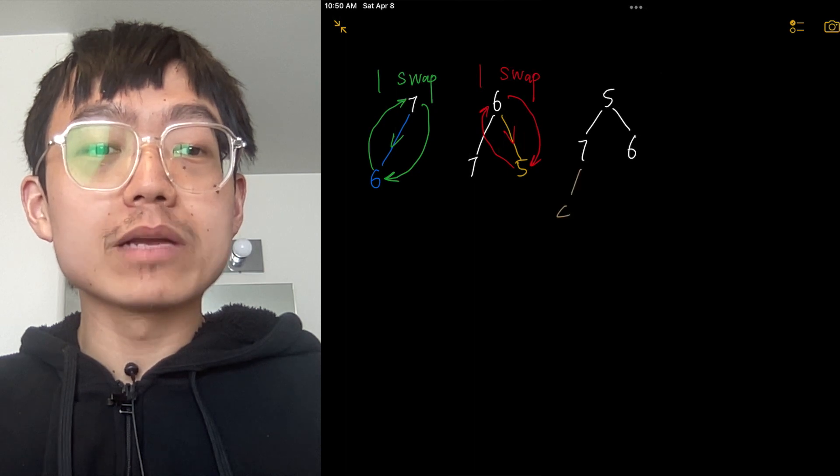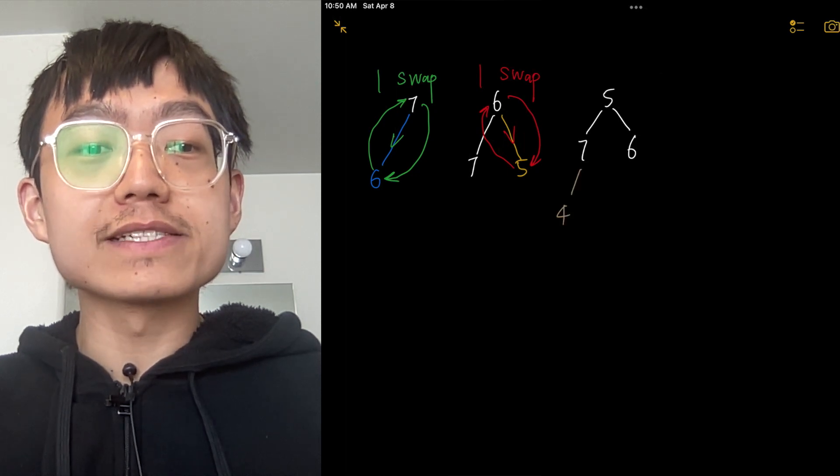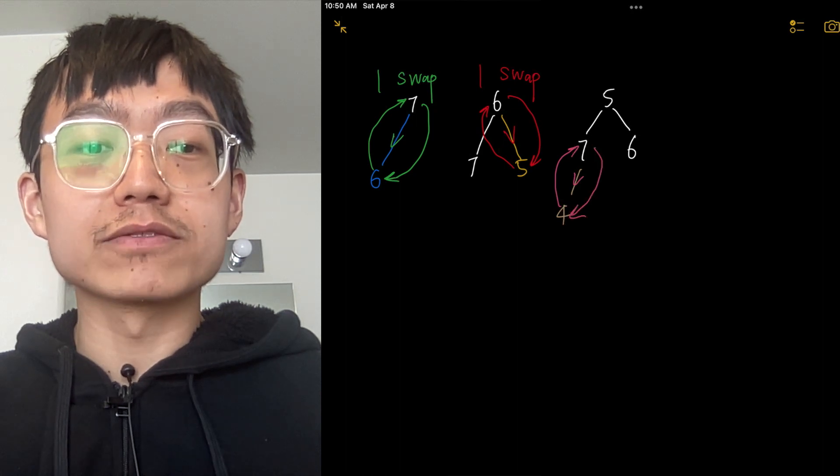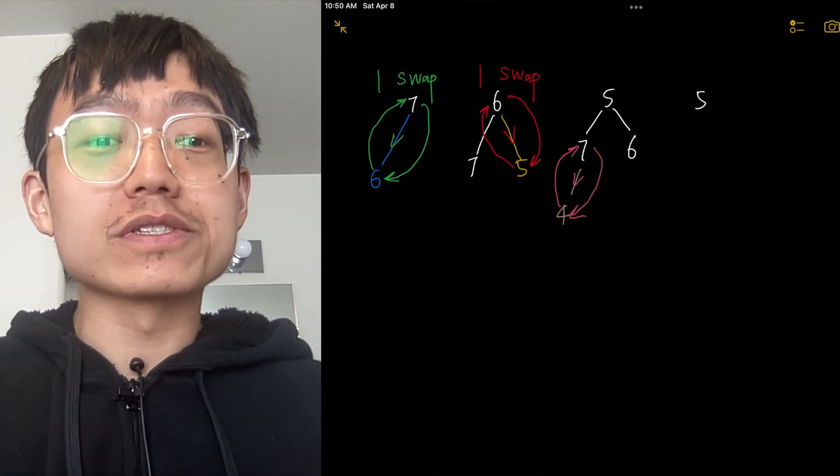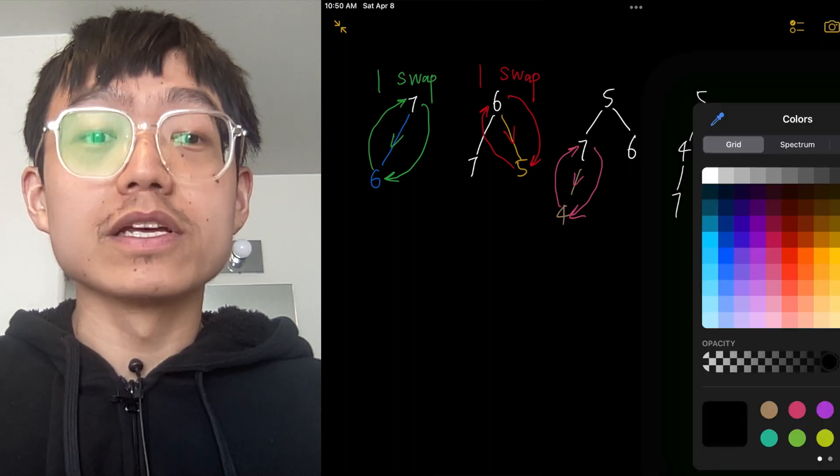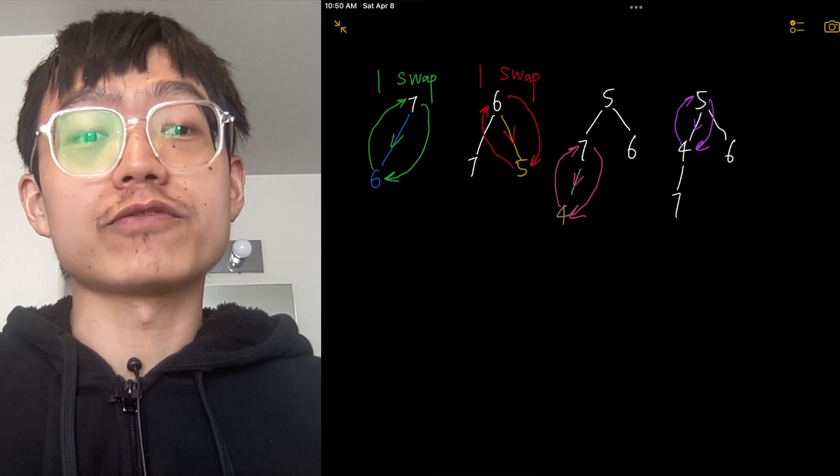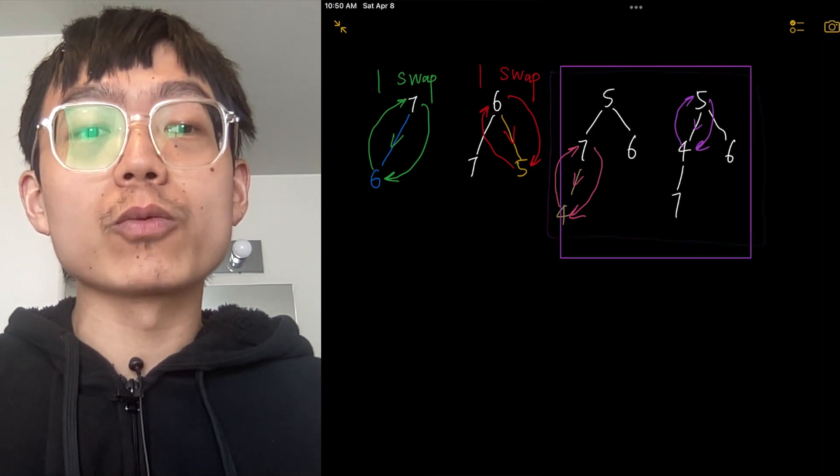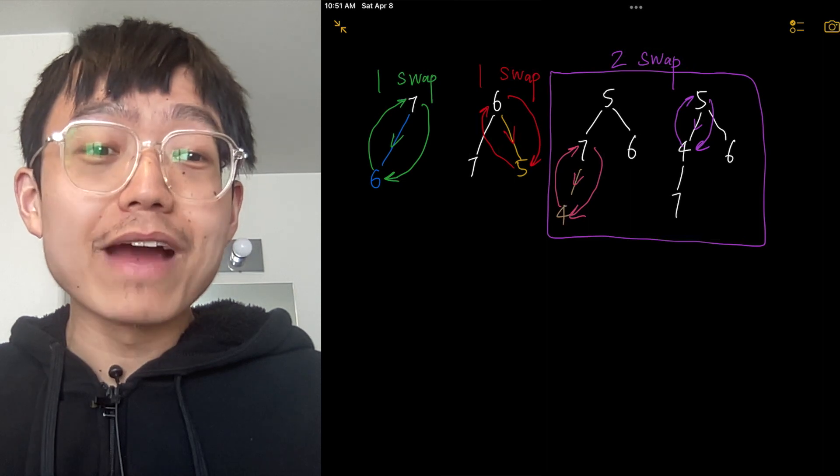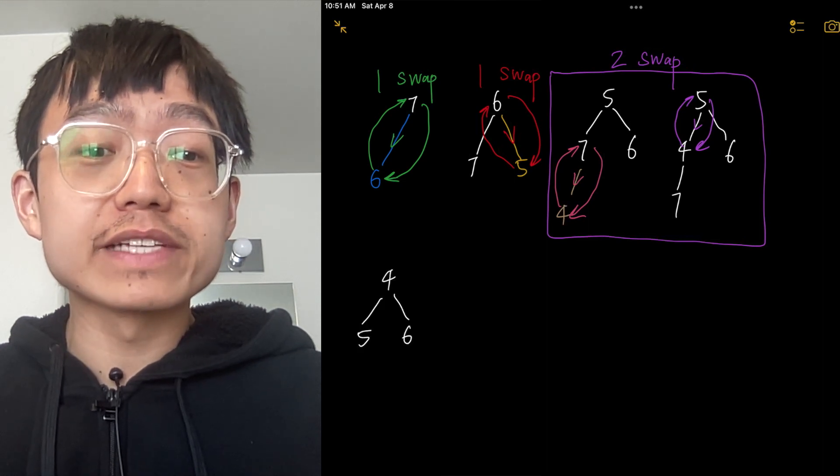Then we want to insert a new element 4. Because 4 is less than its parent node 7, we have to swap 7 and 4. But now 4 is also less than its parent node 5 and its brother node 6, so we have to swap 4 and its parent node 5. So in total, we have to swap node 4 two times. Now we have the minimal heap 4, 5, 6, 7.